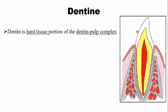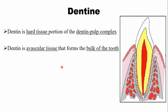This is a drawing of an anterior tooth from the proximal aspect. In the crown portion, dentine is covered by enamel, and in the root portion it is covered by a thin layer of cementum — shown here in brown. Dentine is avascular, meaning it has no blood vessels; tissue fluid provides nutrition to it. Dentine forms the bulk of the tooth, both in the crown and the root.